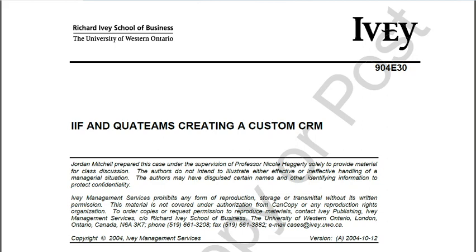CRM is a complete business strategy — not just an information system. It's a way of managing and dealing with your entire business and customers, not just about implementing software. The word 'technology' does not necessarily mean the latest technology; it could be something as simple as an Excel sheet or a register with a pencil and paper. CRM solutions may not necessarily require computerized electronic systems.